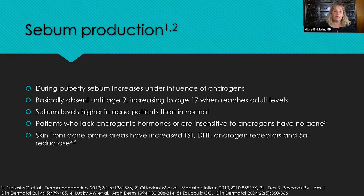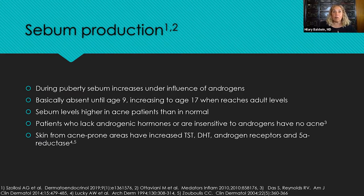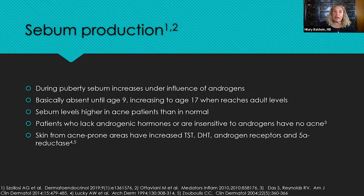Sebum production goes up at puberty under the influence of androgens, and is basically absent until about age nine, then slowly creeps up, increasing until about age 17 where it reaches adult levels. Sebum levels are higher in acne patients than in people without acne. Patients who lack androgenic hormones altogether — born with a mutation or insensitive to androgens — have no acne at all. So the bottom line is: no sebum, no acne. We also know that skin from acne-prone areas has an increase in testosterone, dihydrotestosterone, androgen receptors, and 5-alpha reductase.